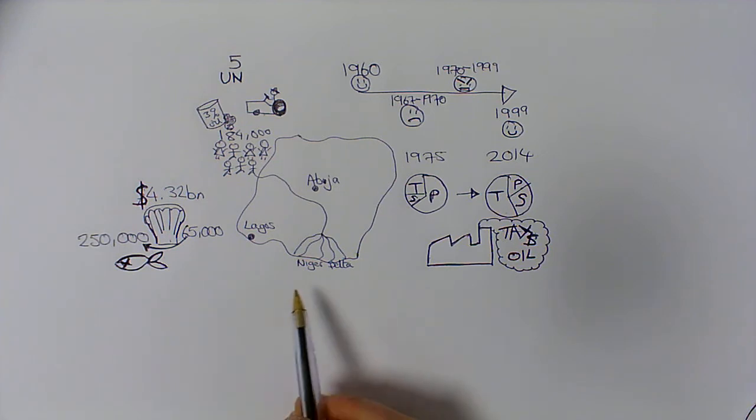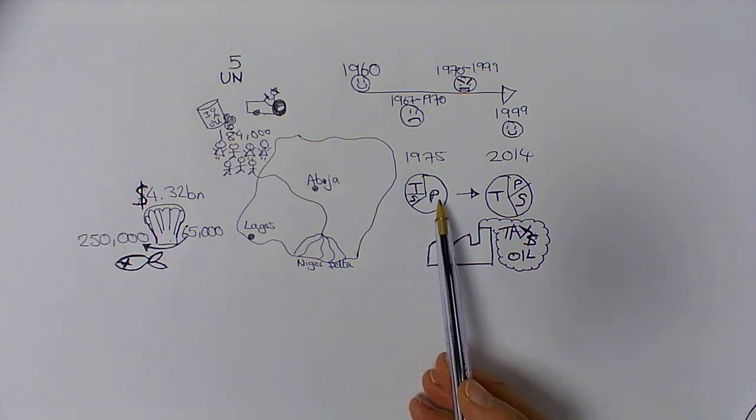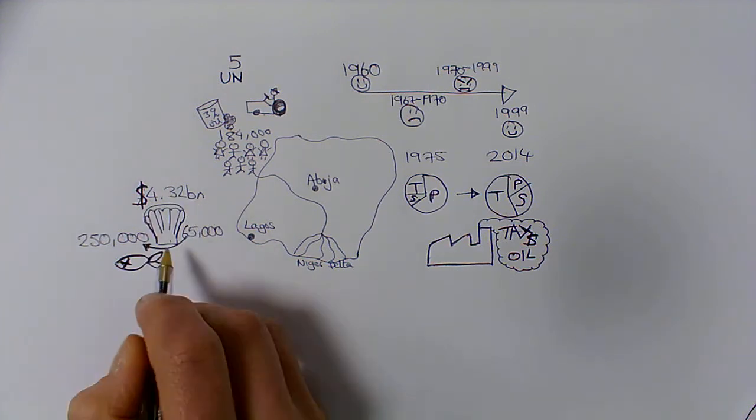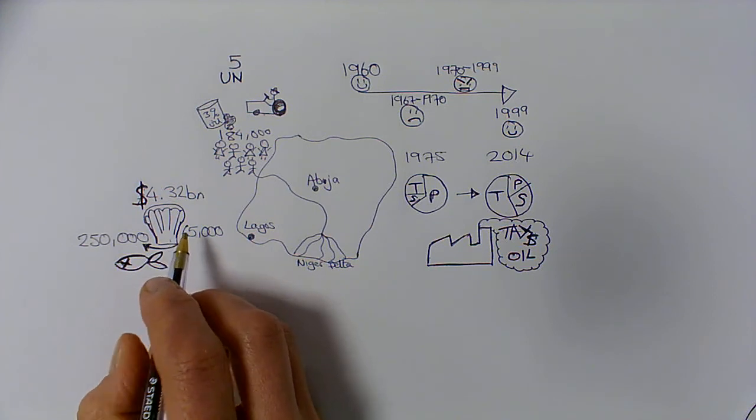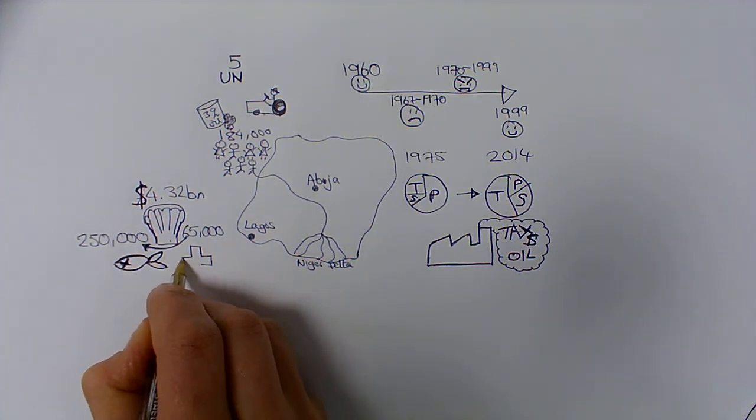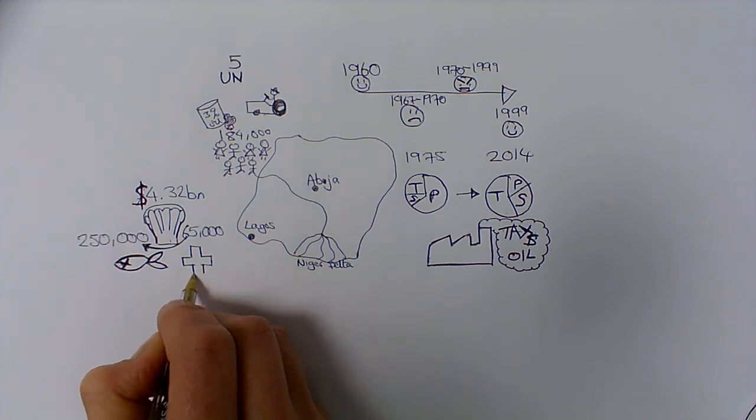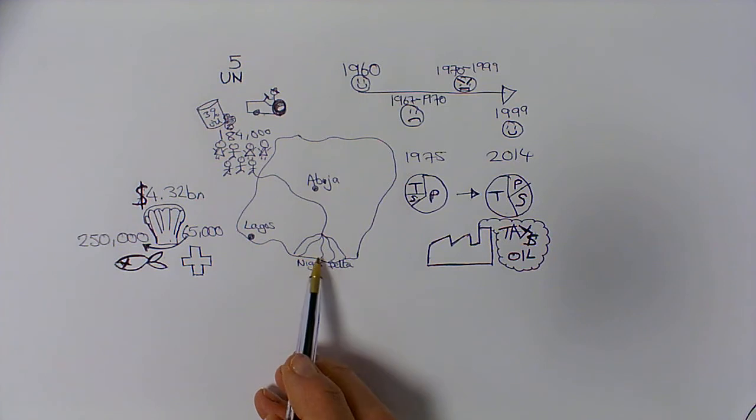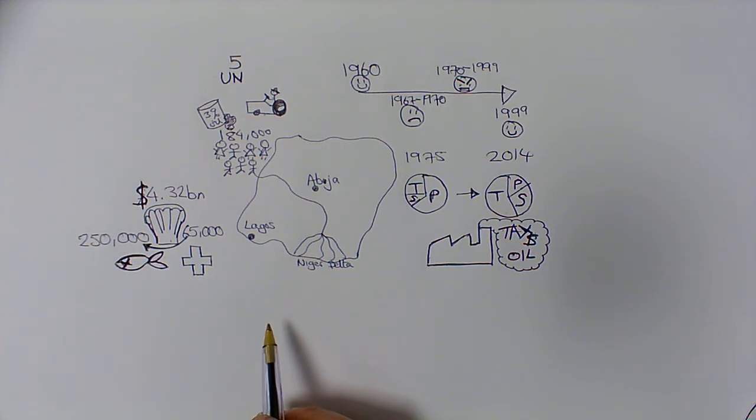So as the country has developed over time, yes, we have got changes. We've got industry. We've got an example of a TNC and their investment, the good things and bad things. One other positive we should say about the TNC is the health care. So Shell, as part of their operations, they have built a number of health clinics in the rural areas, often where they operate. And that has had a positive impact on the life expectancy and health of many people who've been able to access it.